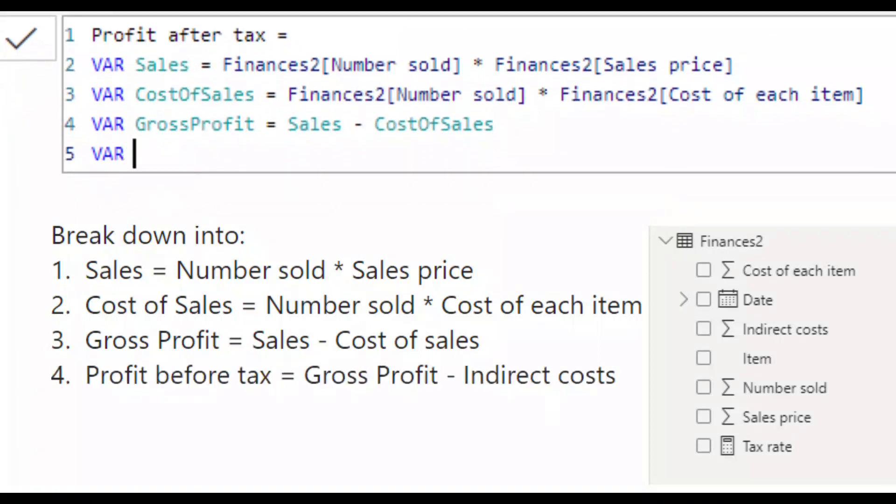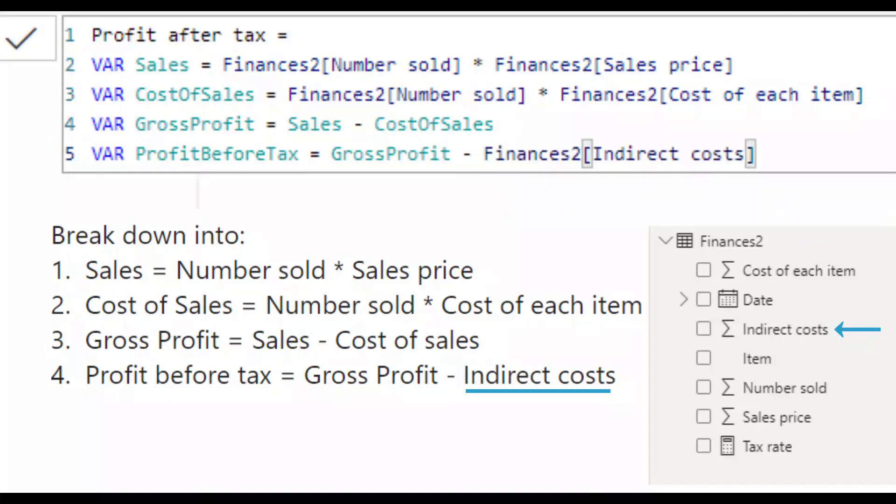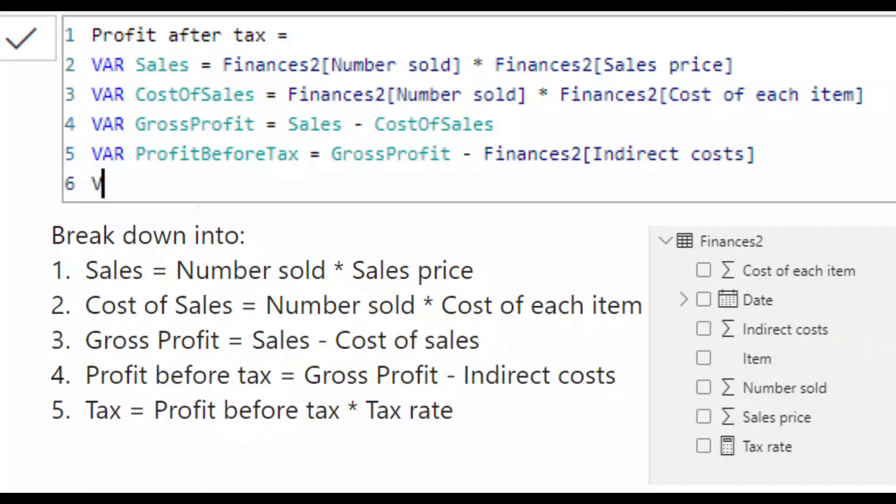On a new row, I'll set up my variable profit before tax. And say that equals gross profit minus. And from my finances table, I'd like the indirect costs. On a new row, my next variable is tax, which equals the profit before tax in row five, multiplied by the tax rate. My tax rate is contained within a measure. So I select the measure here.